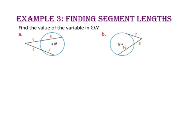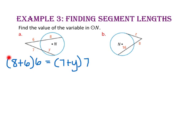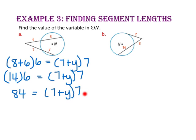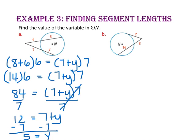In example 3, we will find segment lengths. Find the value of the variable in circle N. For part A, since we have two secants, we multiply the entire secant (8 plus 6) times the outer portion 6, equal to the entire secant (7 plus y) times the outer portion 7. 8 plus 6 is 14, times 6 is 84. Dividing both sides by 7 gives 12 equals 7 plus y. Subtract 7 from both sides and y equals 5. For part B, since we have a secant and a tangent, (8 plus 16) times 8 equals z squared. 24 times 8 equals 192, so z squared equals 192. Taking the square root of both sides, z equals the square root of 192, which rounded to the nearest tenth is approximately 13.9.